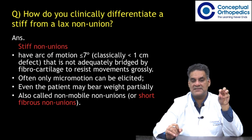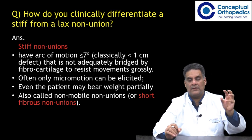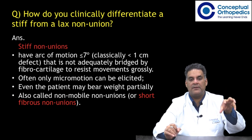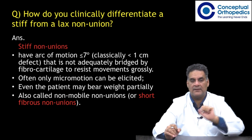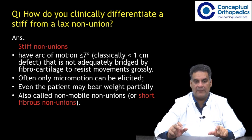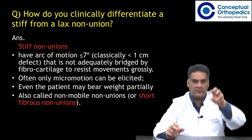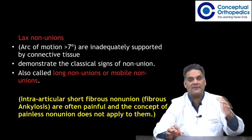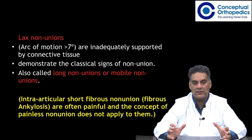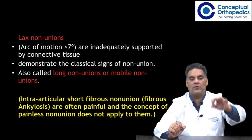How do you differentiate stiff from lax nonunion? Stiff nonunions have an arc of motion usually less than seven degrees, classically less than one centimeter defect, are not bridged by fibrocartilage, resist movement — only micromotion can be elicited, and the patient may partially bear weight. They are also called non-mobile nonunions or short fibrous nonunions. Lax nonunions have an arc of motion greater than seven degrees, are inadequately supported by connective tissue, and are also called long nonunions or mobile nonunions.